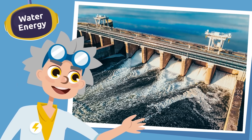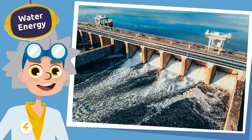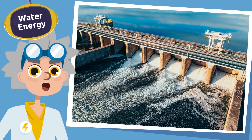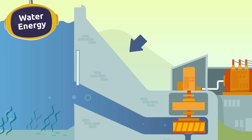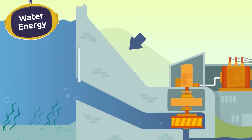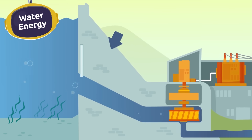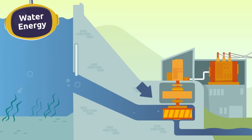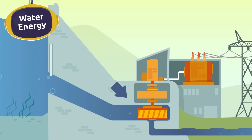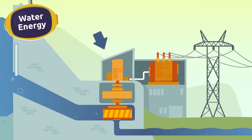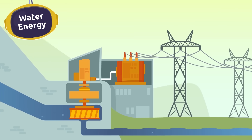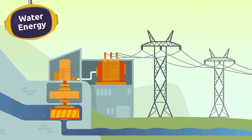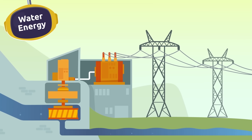We can also get energy from the force of water. Maybe you have seen a dam — it is a big wall built to collect large amounts of water. The water is pushed through pipes, which creates the pressure needed to turn the blades of the turbine, thus activating the generator and producing electricity. This type of energy is called hydroelectricity.